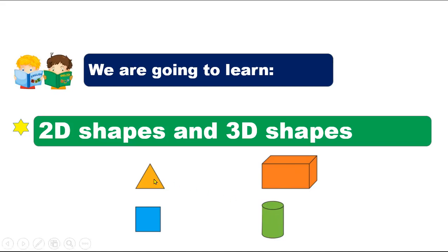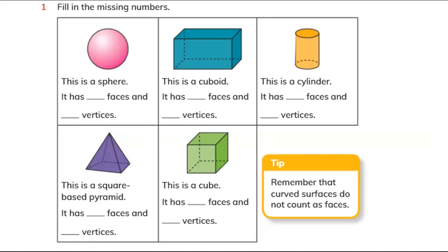So 2D means one face, and 3D means two or more faces. Let's move to the exercise. Here we have Exercise 2.1, Question 1. Look at this sphere — the sphere has no vertices and no corners. So this sphere has zero faces and zero vertices.